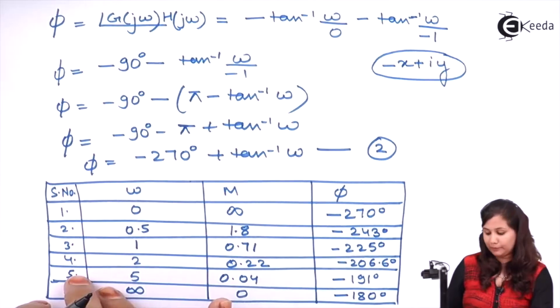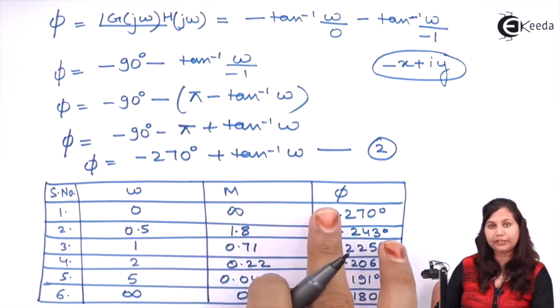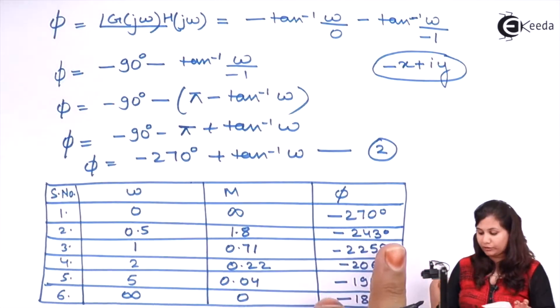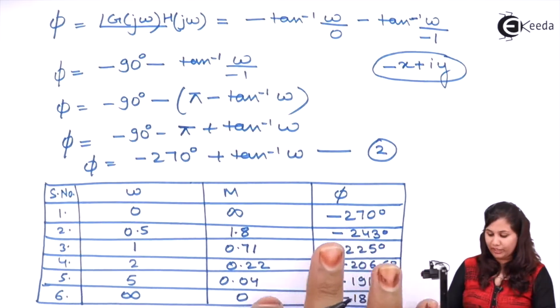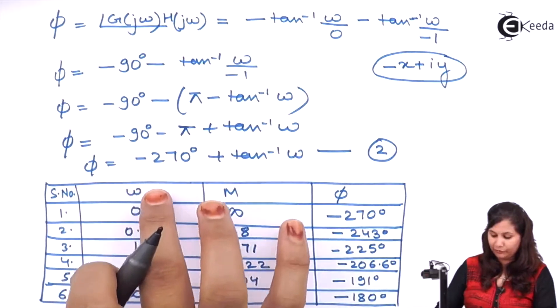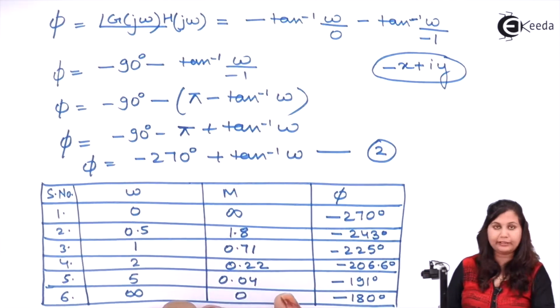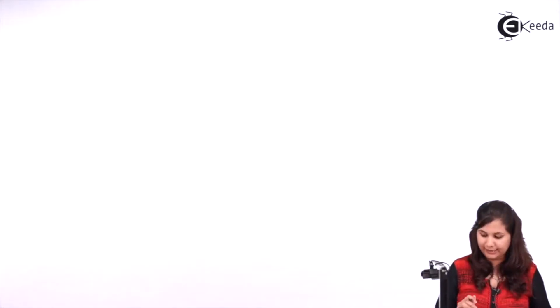The polar plot is the plot of the magnitude and the phase on polar coordinates where we vary the value of ω from 0 to infinity. So let's plot the polar plot for this system.